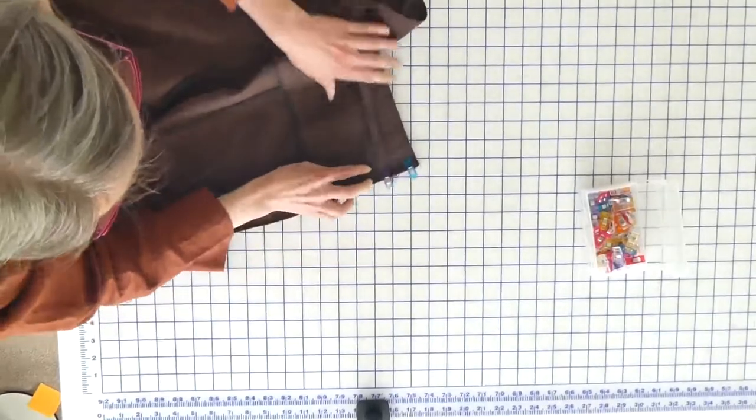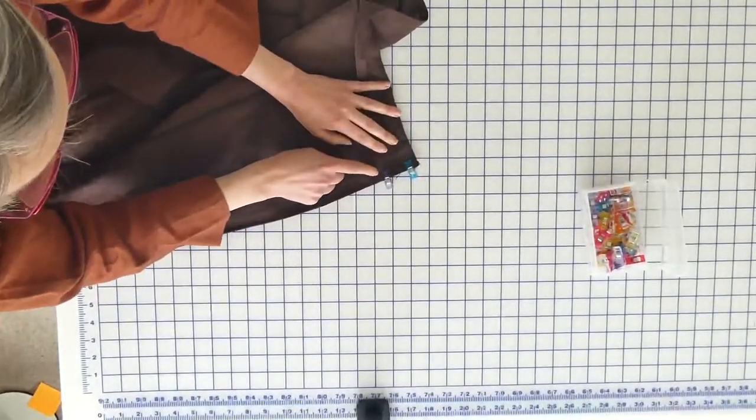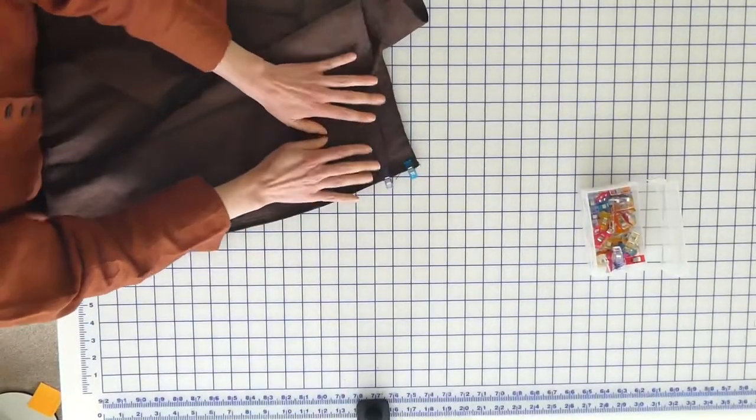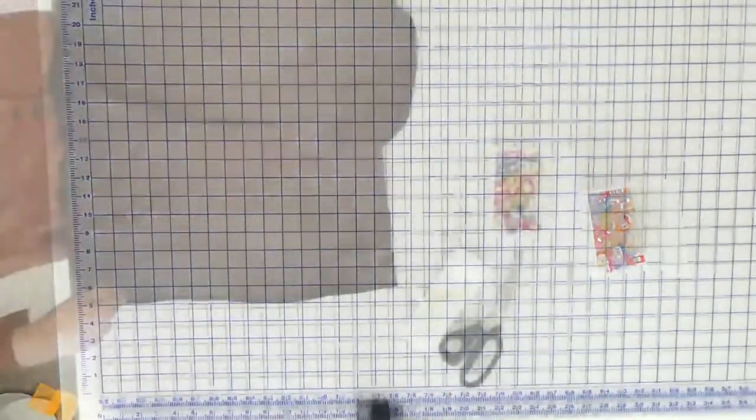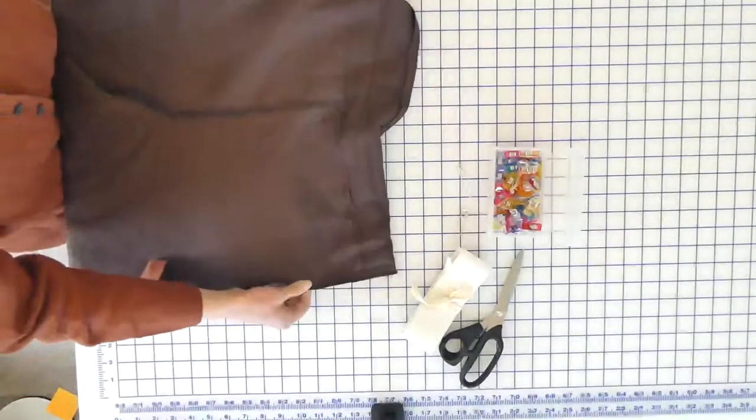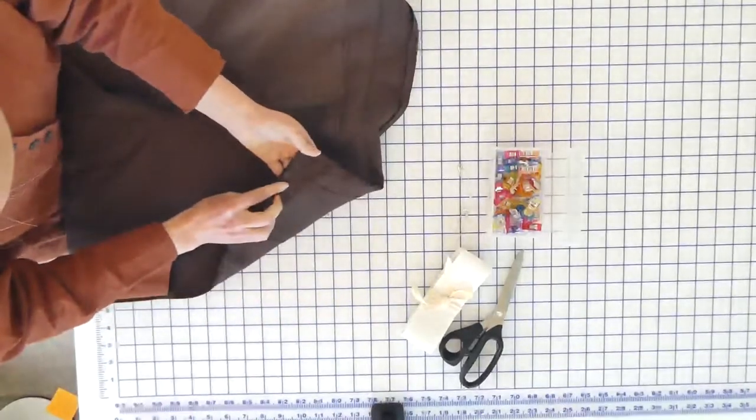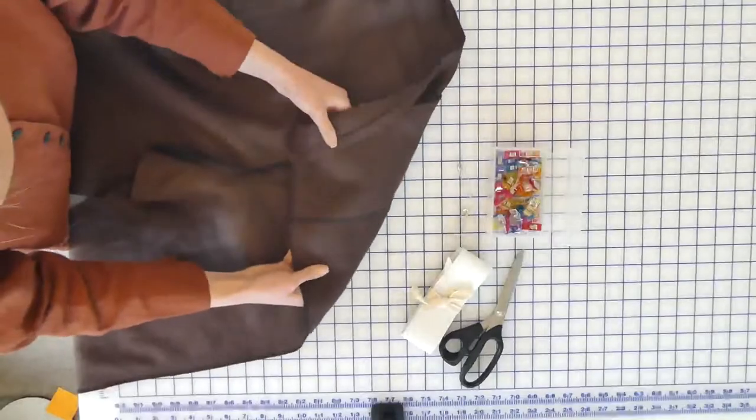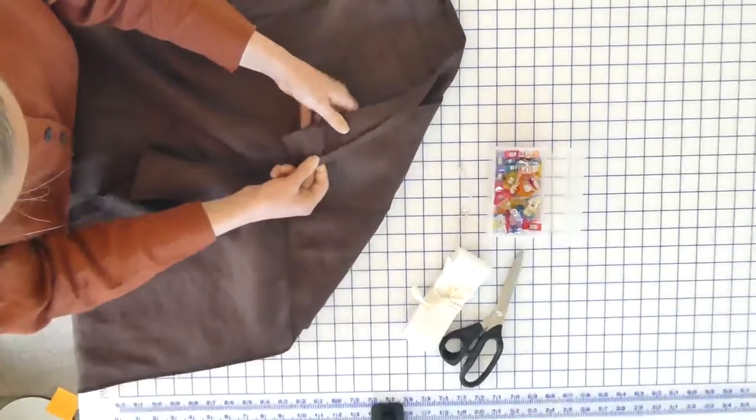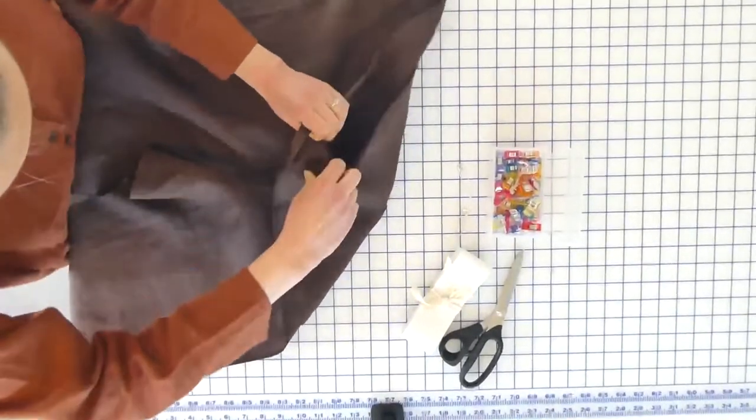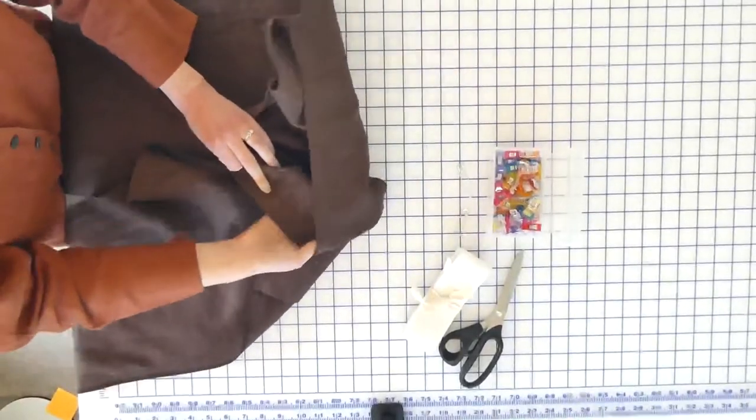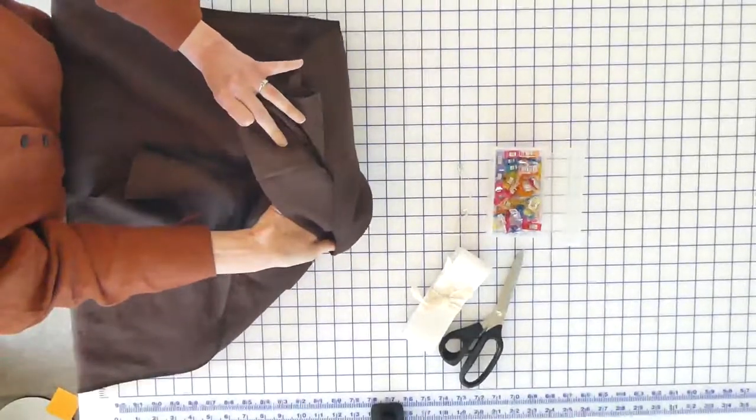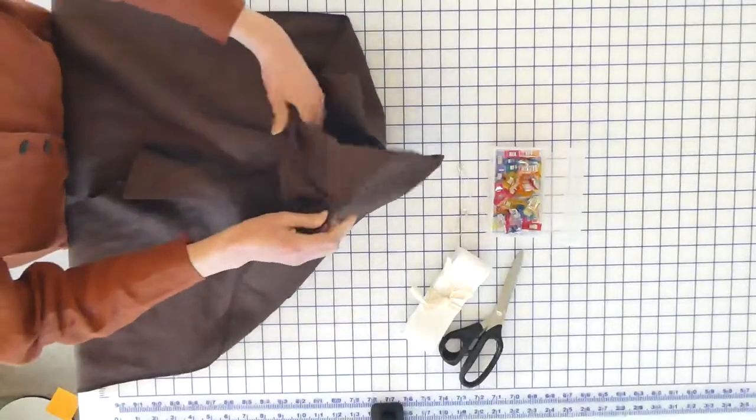All right, so I'm going to go over to my machine and sew this real quick and then I'll be right back. All right, so we're back at our table and we have sewn down our waistband so it's sewn on the outside like it's on the front here. We'll be able to flip it over ultimately and have a nice finish line for our waistband.